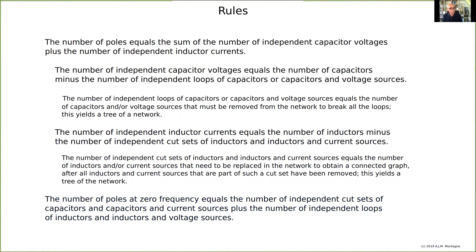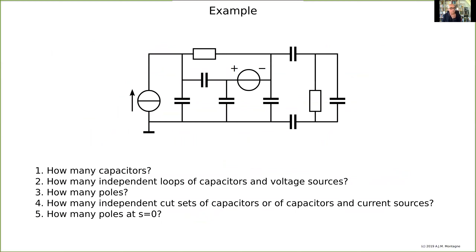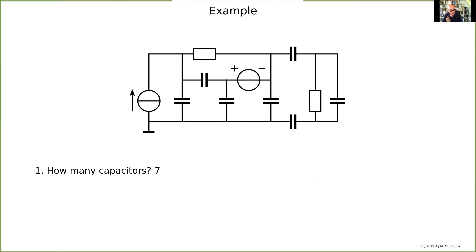Let's do an example. I have an example with seven capacitors and we need to answer the following questions: how many capacitors do I have, how many independent loops of capacitors and voltage sources, and if I subtract that from the number of capacitors I have the number of poles. I can also say something about the number of poles in the origin by looking at the cut sets of capacitors and capacitors and current sources. So step by step: I have seven capacitors — that's simple counting.